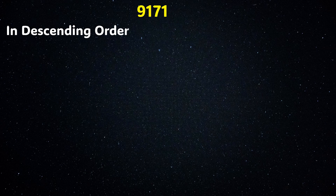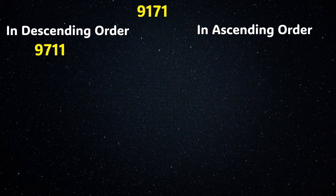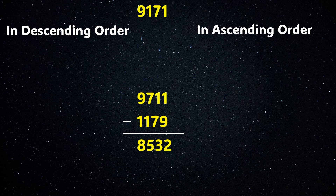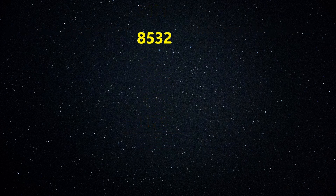We repeat the process: write the digits of 9171 in descending order and get 9711. We write the digits in ascending order and get 1179. We subtract the smallest from the largest and get the resulting four-digit number: 8532.